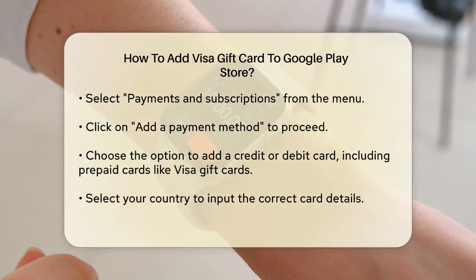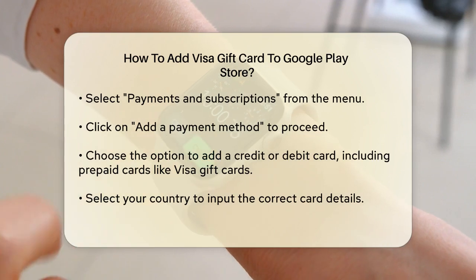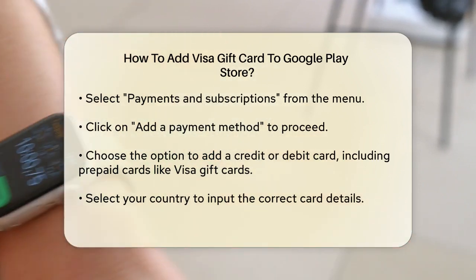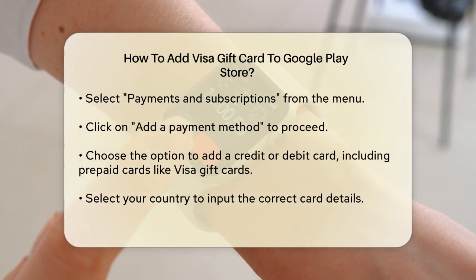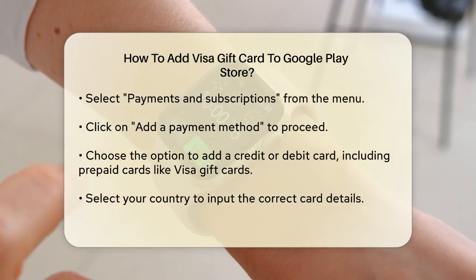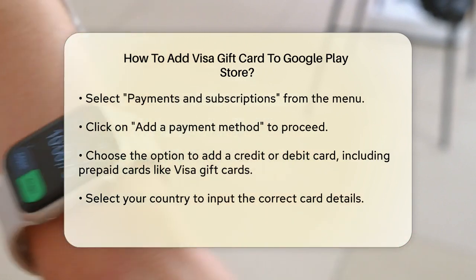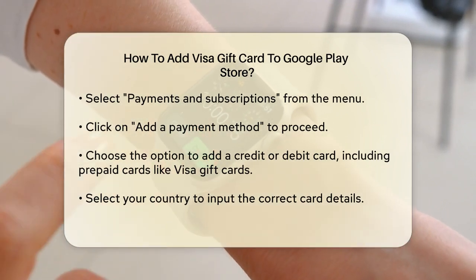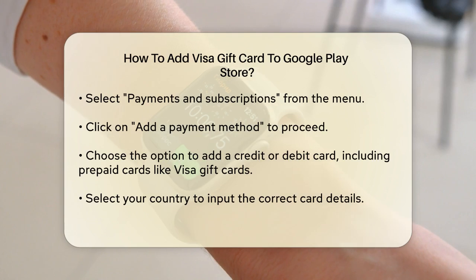You will now see a list of your current payment methods. Tap or click on Add a Payment Method. Here you can select the option to add a credit or debit card, which includes prepaid cards like your visa gift card.